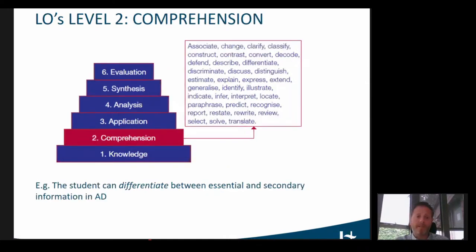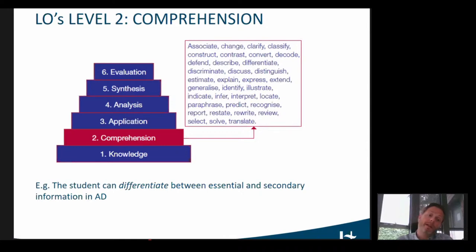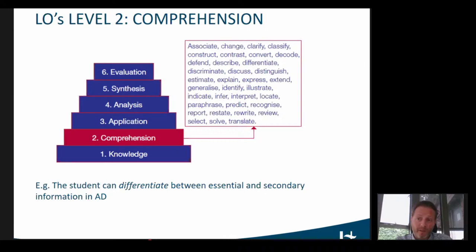Moving to the second level — comprehension — the student should have the ability to understand and interpret what they learn. An example here could be that the student has to be able to differentiate between essential or 'need to have' information in AD and secondary or 'nice to have' information, which may be particularly crucial in film AD when you only have a few seconds between dialogues to describe what you see on screen.